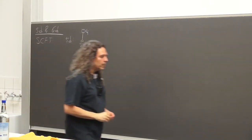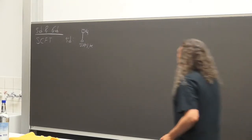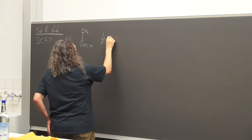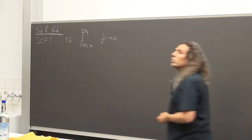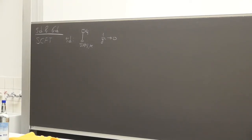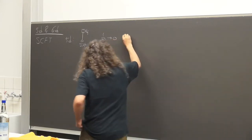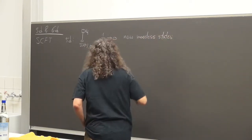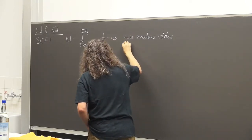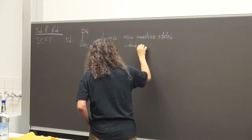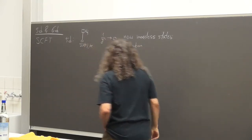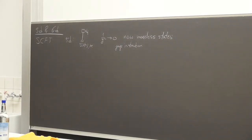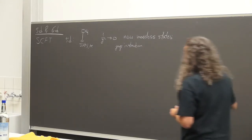The question I will ask is to take the gauge coupling to zero. We know that new massless states arise — specifically the mass of a gauge instanton, which is a particle in five dimensions. Those new massless states give rise to some conformal field theory. I will ask: what is the Higgs branch of this conformal field theory?